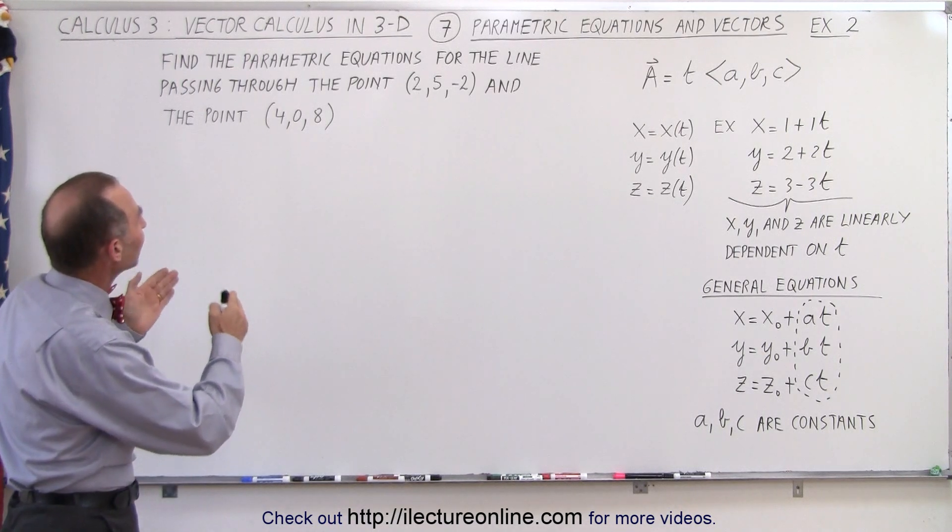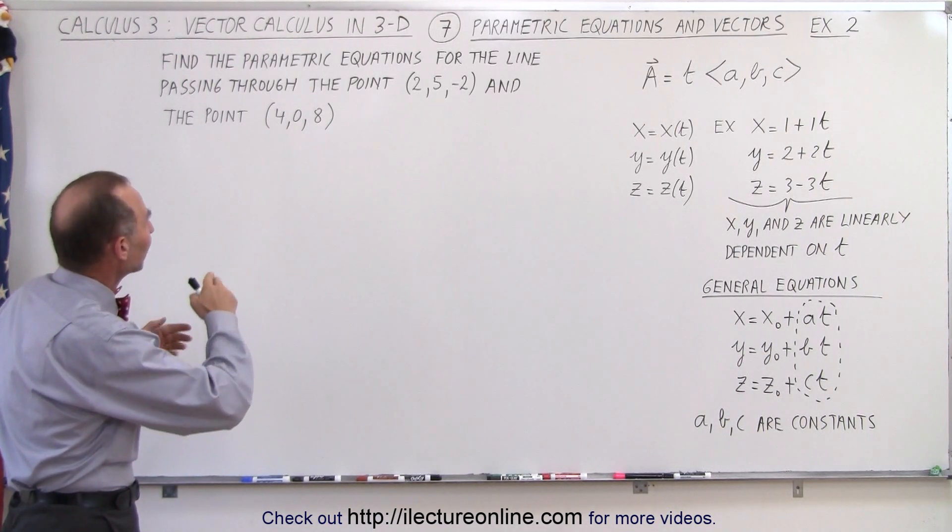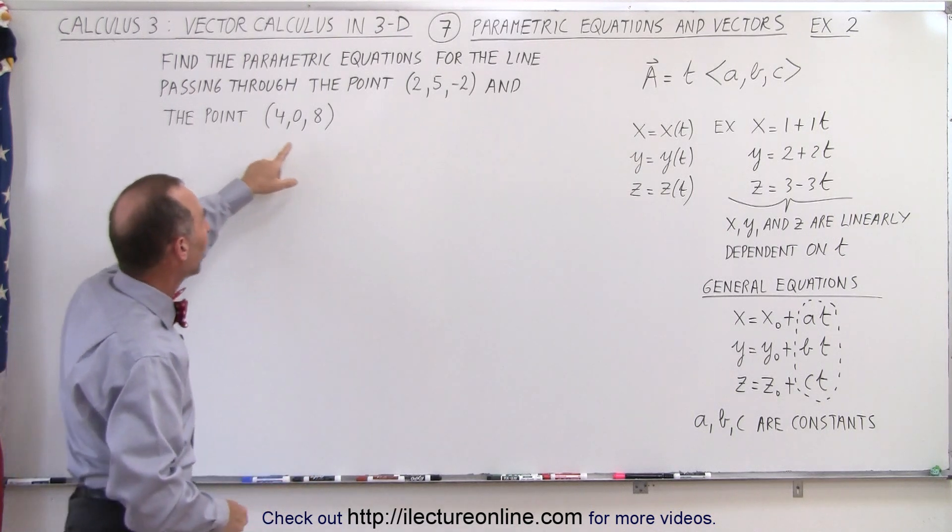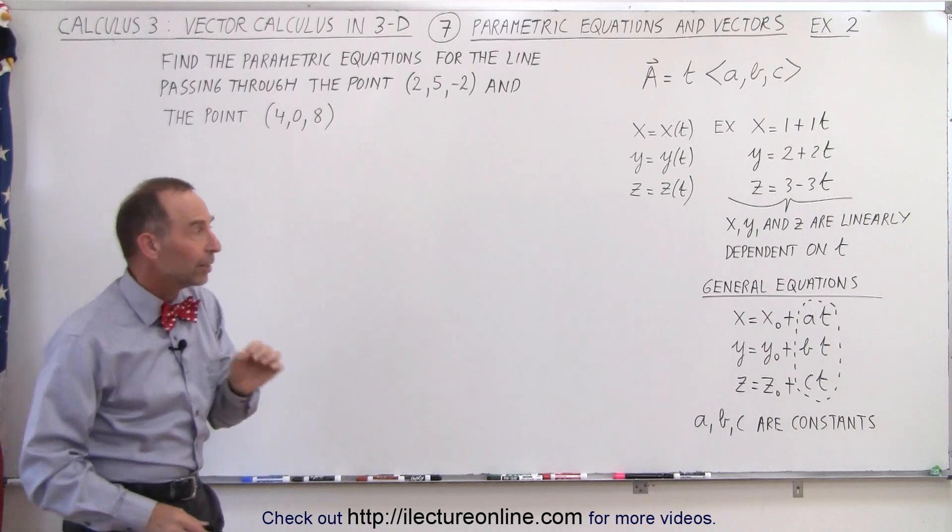Here we're asked to find the parametric equations for the line passing through two points, point 1 at (2, 5, -2) and point 2 at (4, 0, 8).